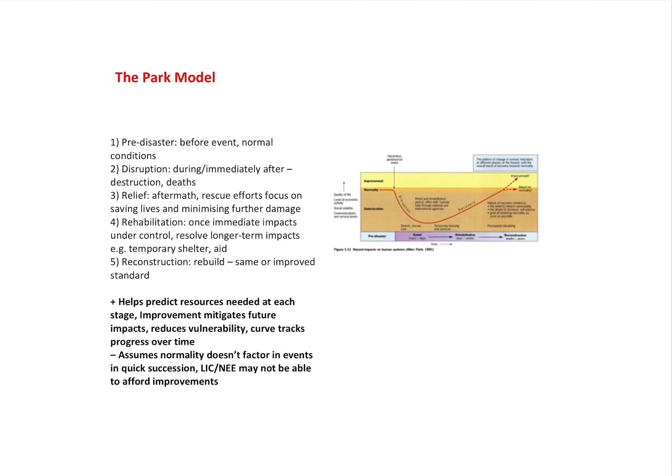If I'm thinking about hazards, I've got to consider the park model. The park model is something that goes side by side here. The park model says there are five main things happening if I follow this red line or the journey on the graph. So pre-disaster, before the event, normal conditions. Then disruption, which is during or immediately after. Relief, which happens in the aftermath. Rehabilitation, once we've got some impacts under control. And then reconstruction, which means basically rebuilding to the same or improved standard.